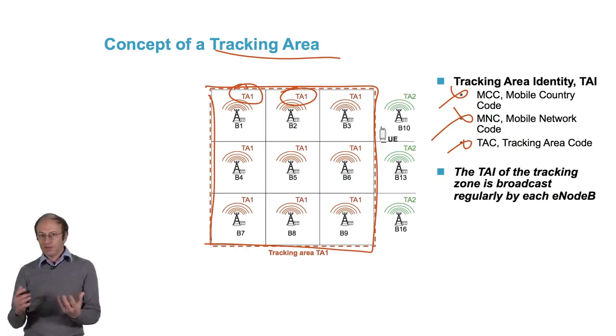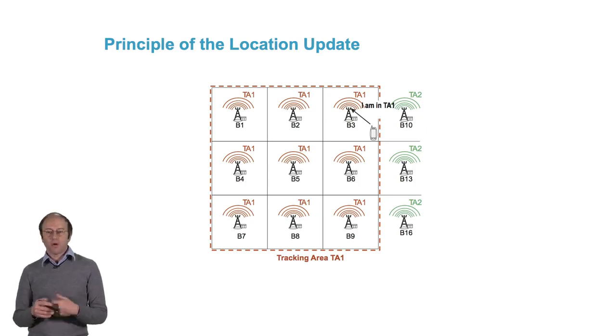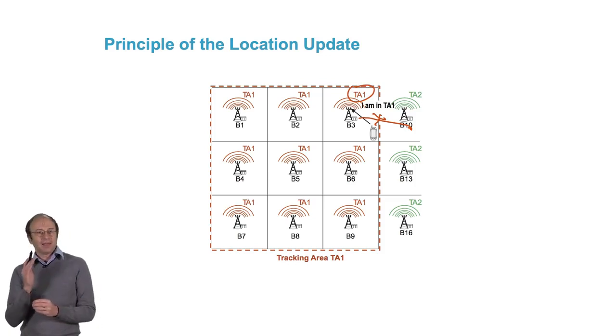How does this work? The terminal still listens to the beacon channel. If it's coming, for example, from base station B10, when it enters zone TA1, it will detect a base station broadcasting a code that is different from the previous one. The terminal detects the change of tracking area.